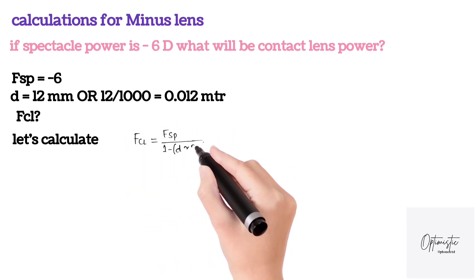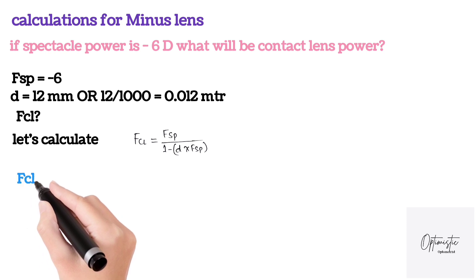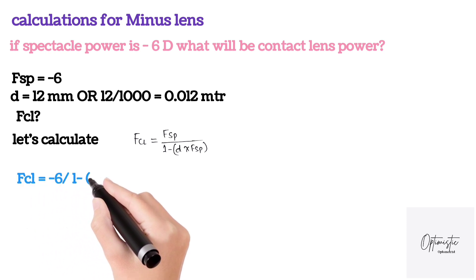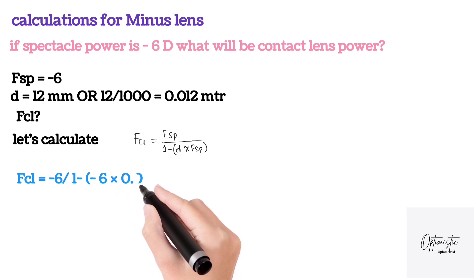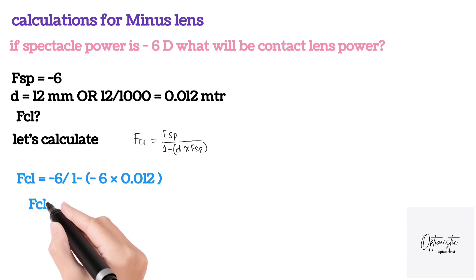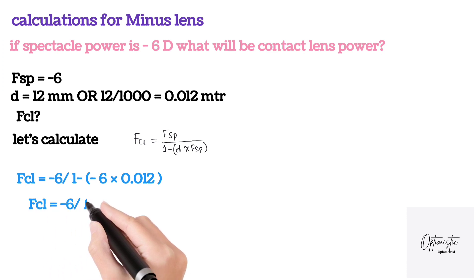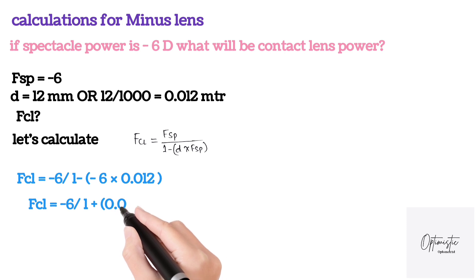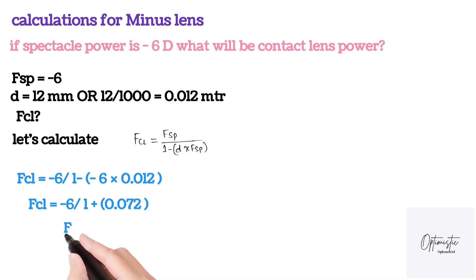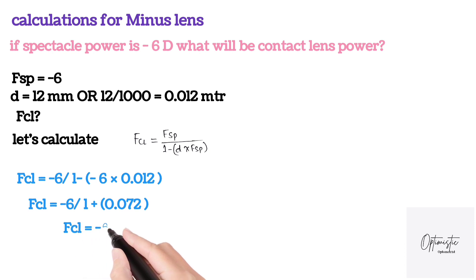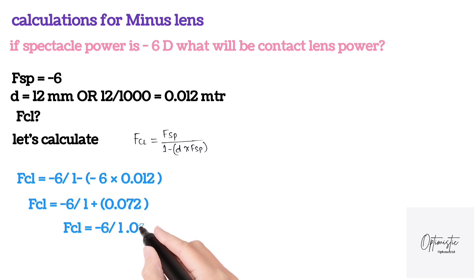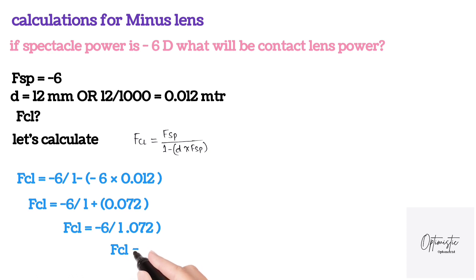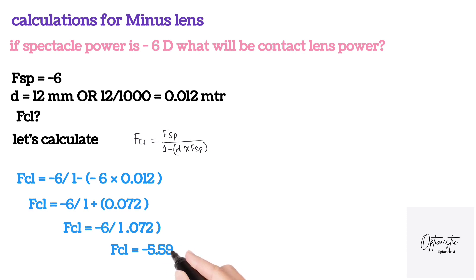Writing the formula: FCL = FSP / (1 − d × FSP). Substituting values: FCL = −6 / (1 − (−6 × 0.012)). Make sure to include the sign of the spectacle power, as it can affect your result. So FCL = −6 / (1 + 0.072). We get 0.072 by multiplying −6 by 0.012. Adding 1 and 0.072 gives 1.072.